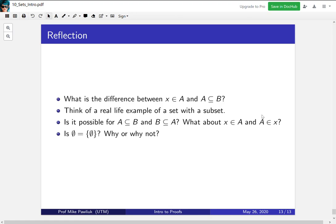Let's end with some reflections. What is the difference between saying x is an element of A and A is a subset of B? Think of a real-life example of a set with a subset. Is it possible for A to be a subset of B and B to be a subset of A? What about x being an element of A and A being an element of x? Can those things happen at the same time? Finally, are these two things equal? Why or why not?